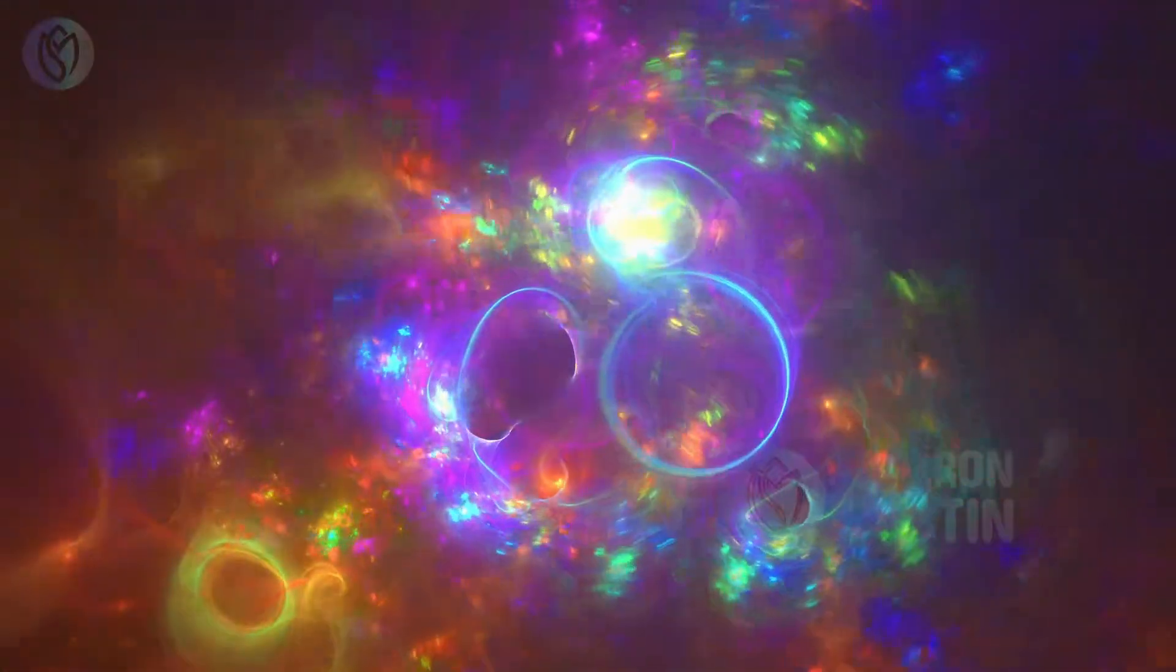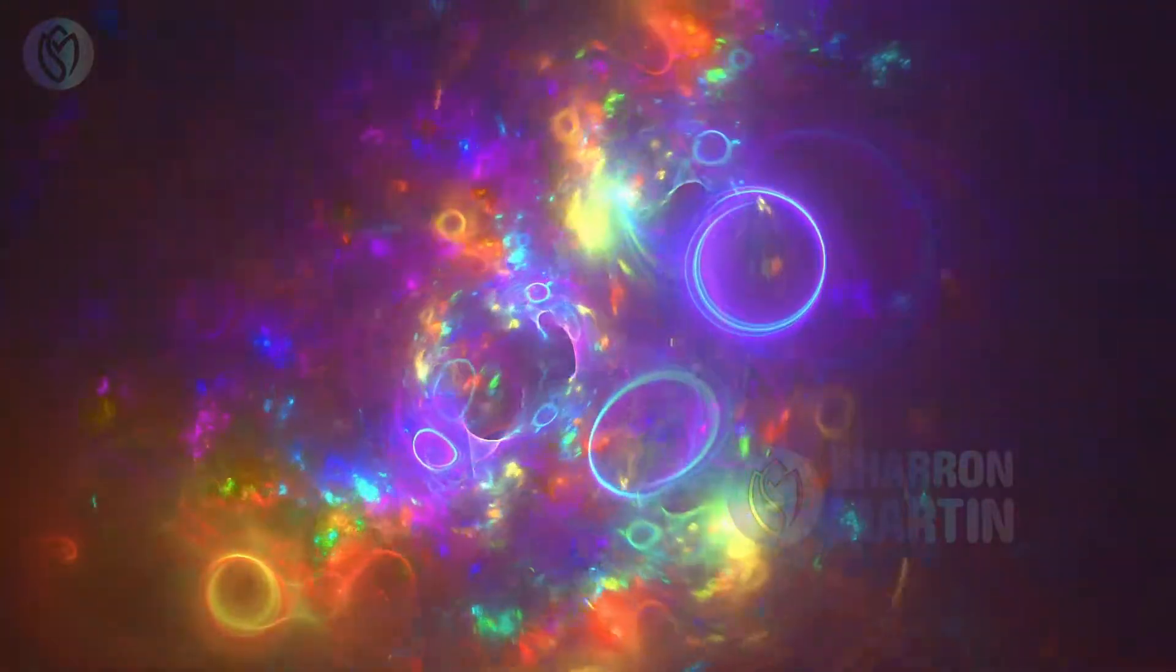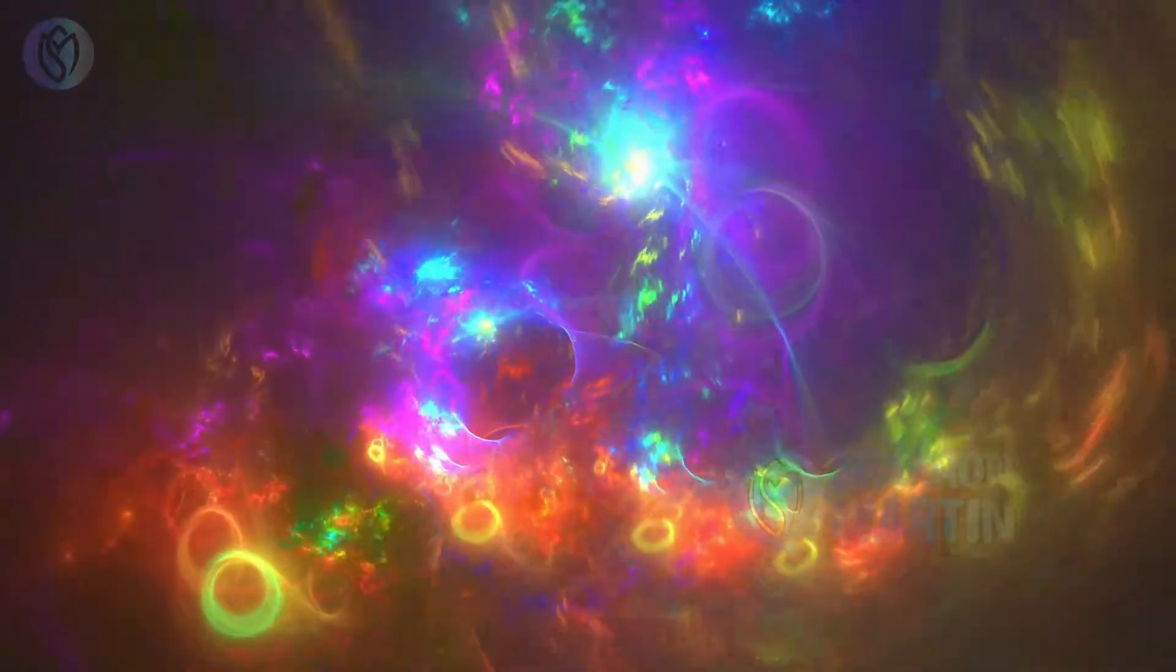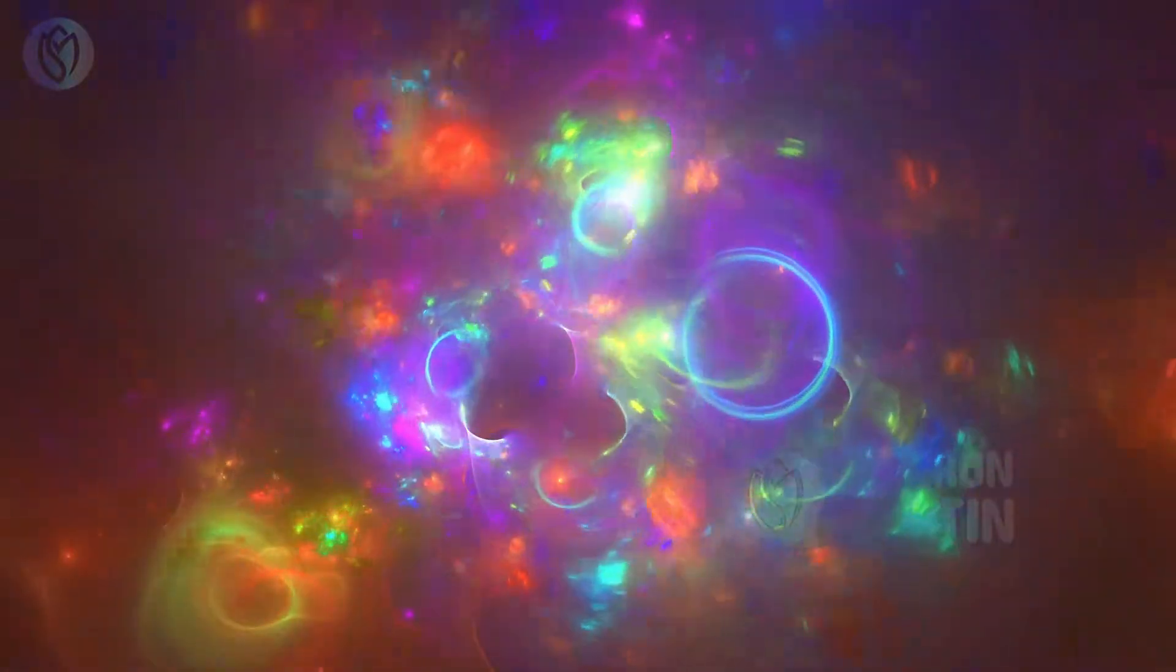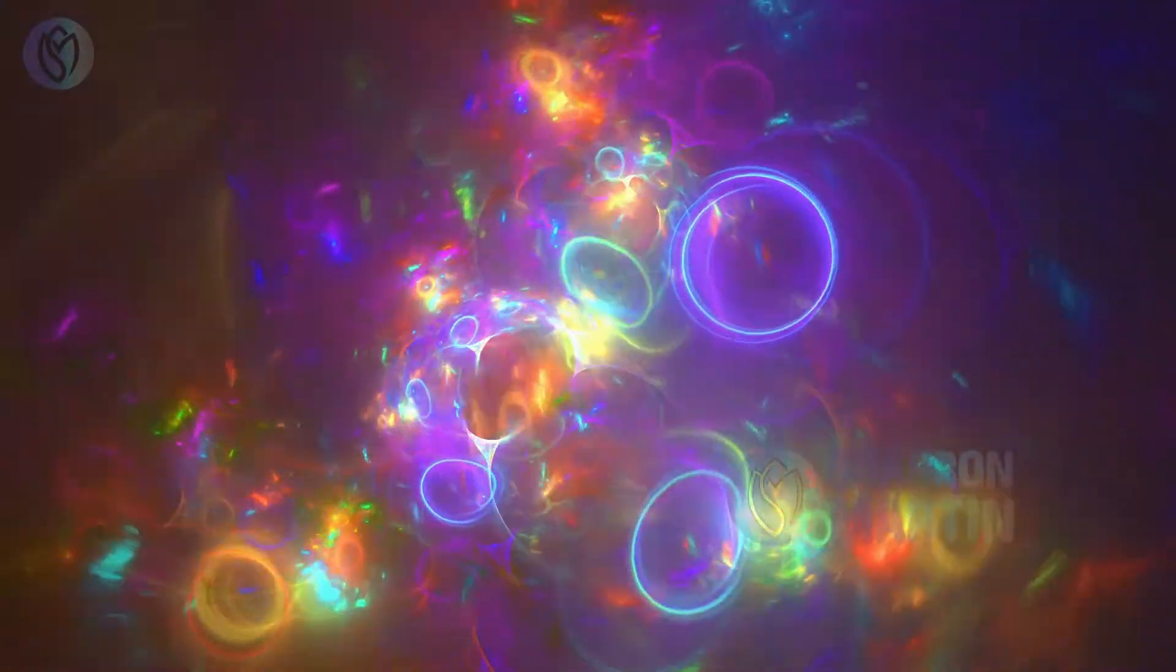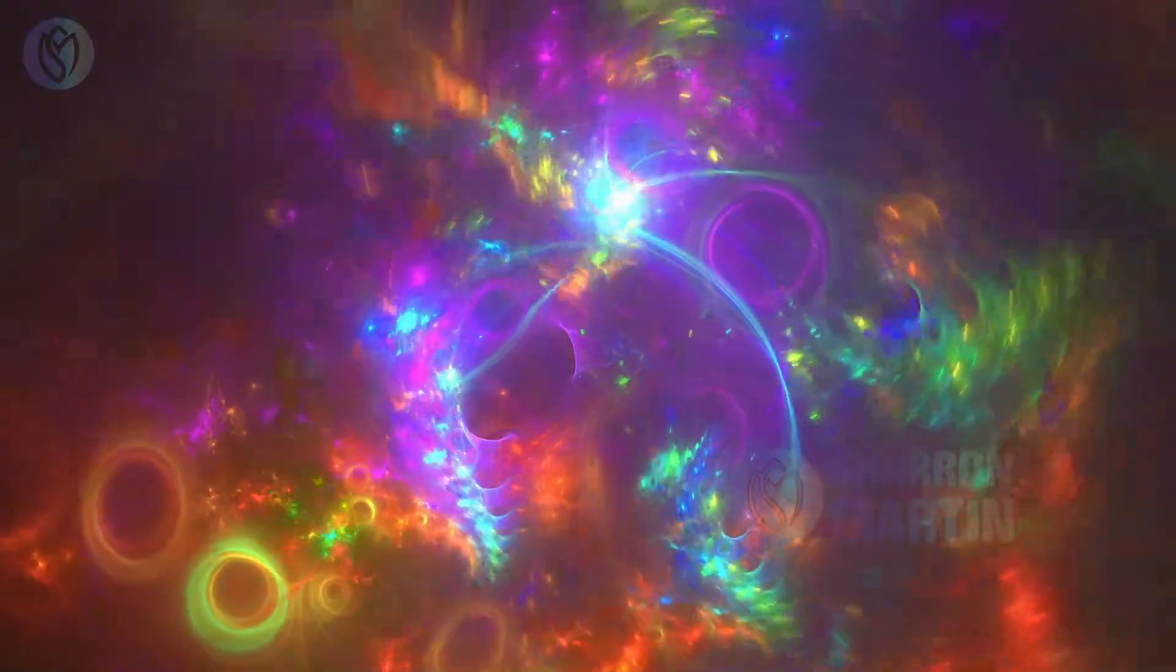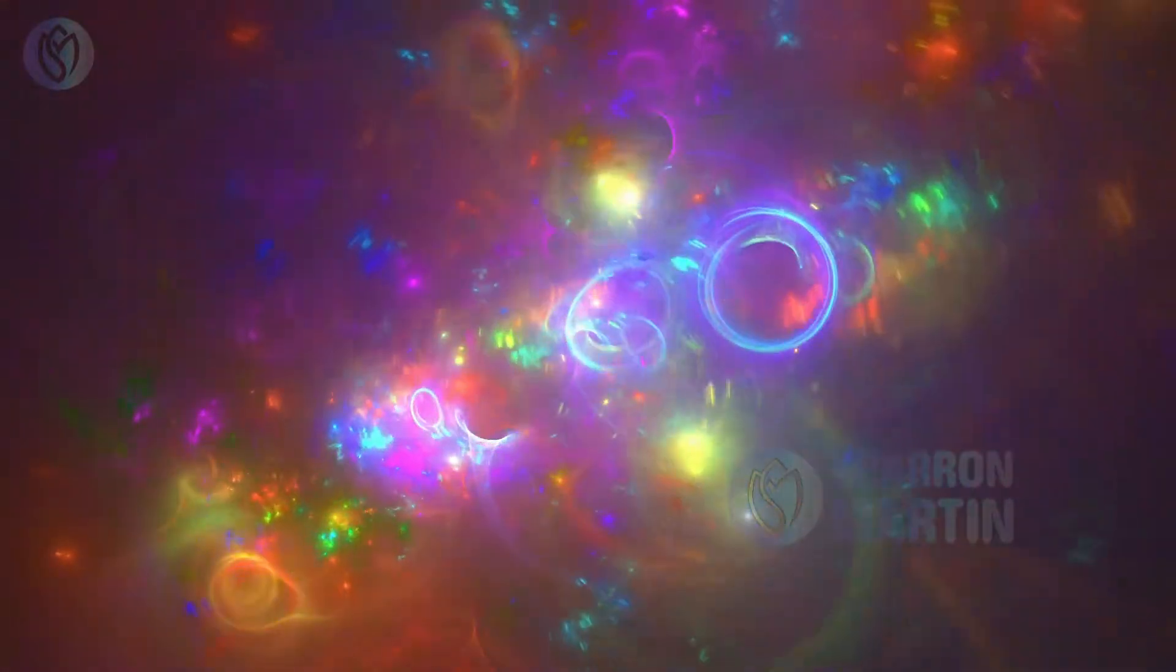Beginning with your grounding chakra, the earth star chakra, let's just do that as one breath. Moving up to the root, the base at the tailbone, feeling the warmth of that chakra radiating through. And then the sacral, filling your pelvis with this expanded, clean, clear light.